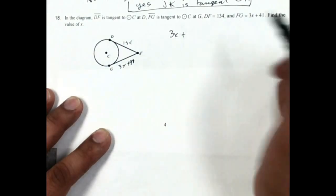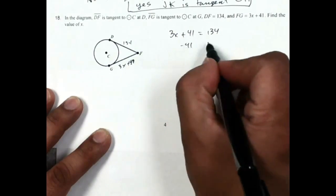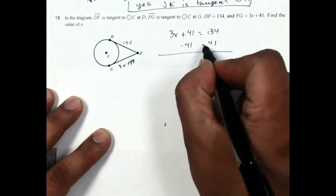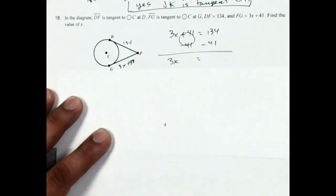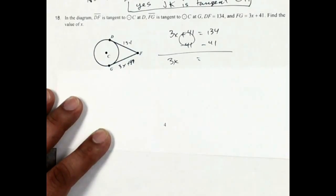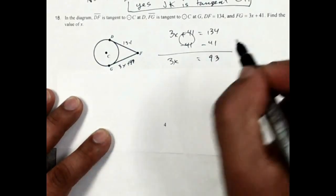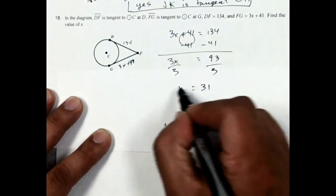So I'm going to have 3x plus 41 is equal to 134. If I subtract 41 from both sides, we get 3x is equal to 134 minus 41. It comes out to be 93. If I divide by 3, x is going to be equal to 31.